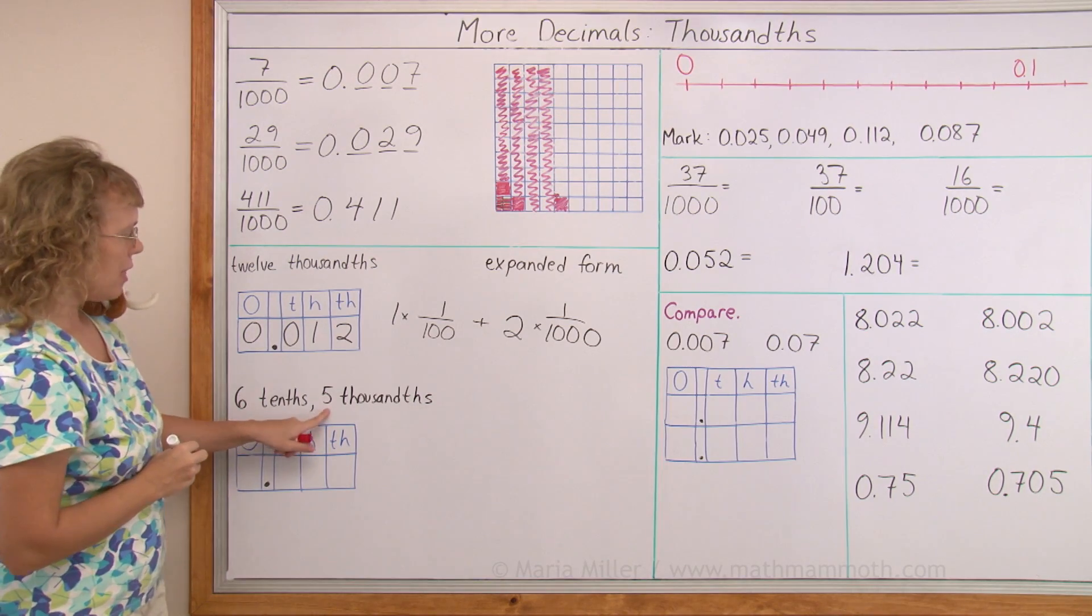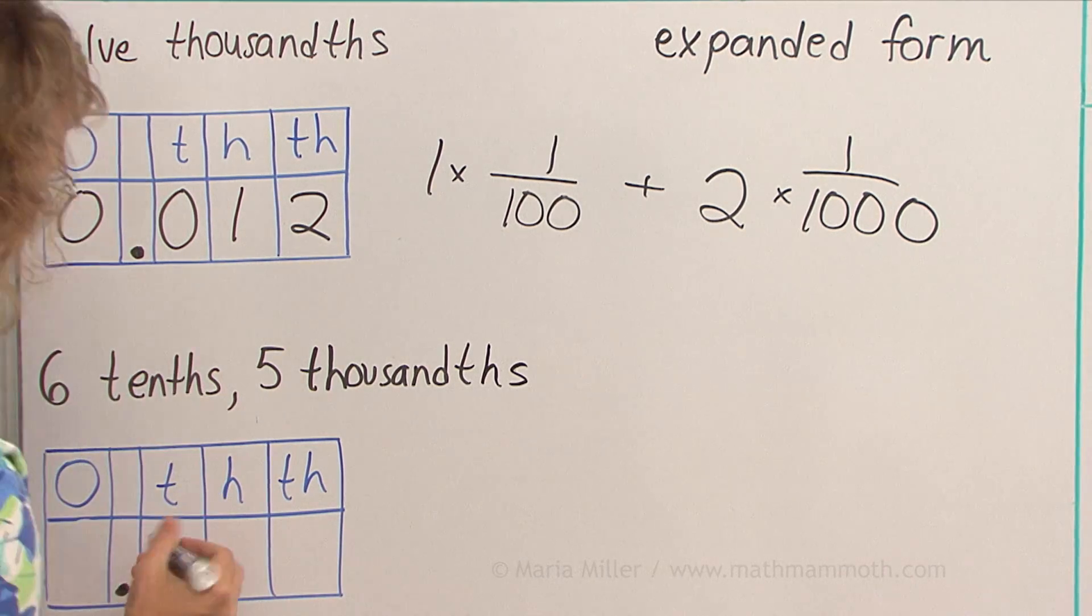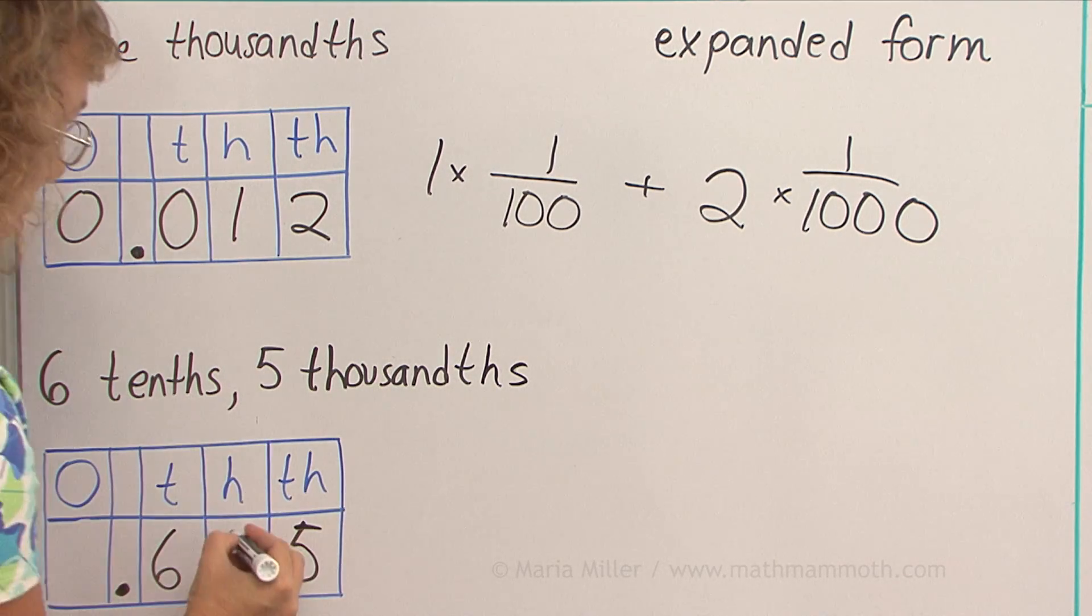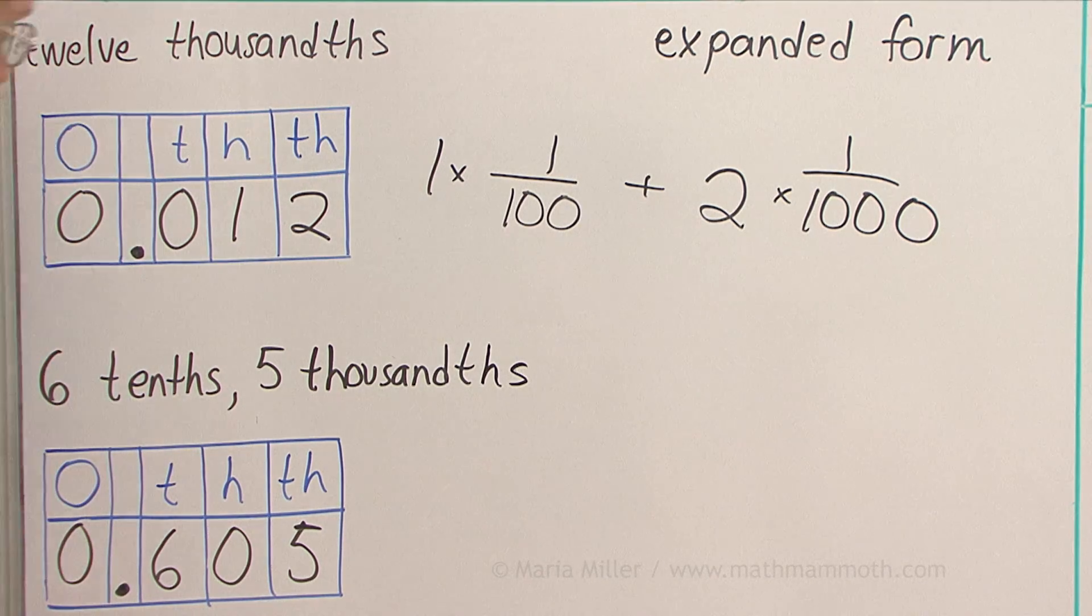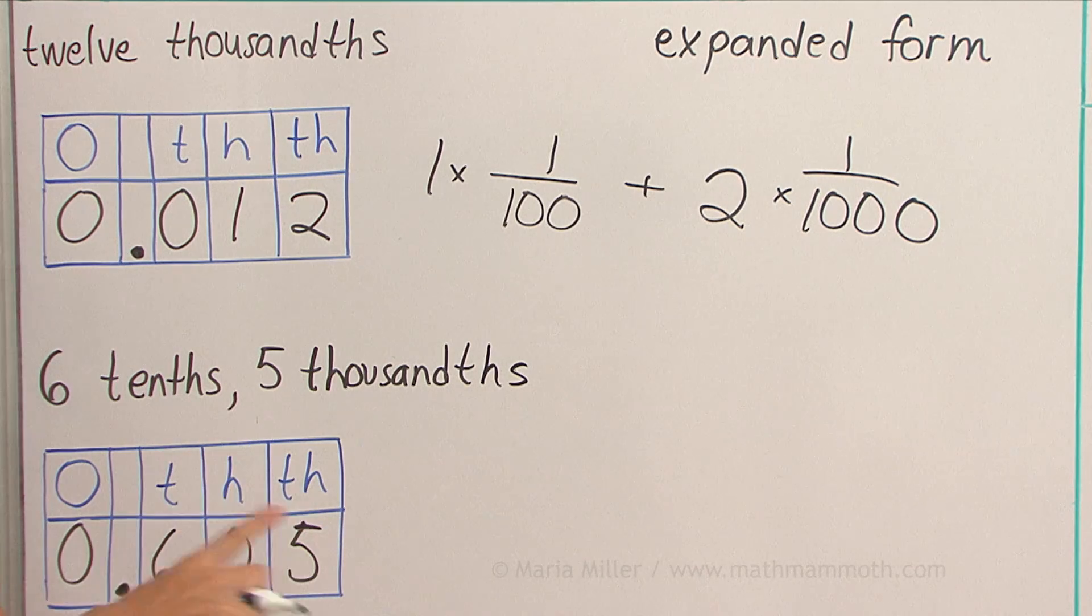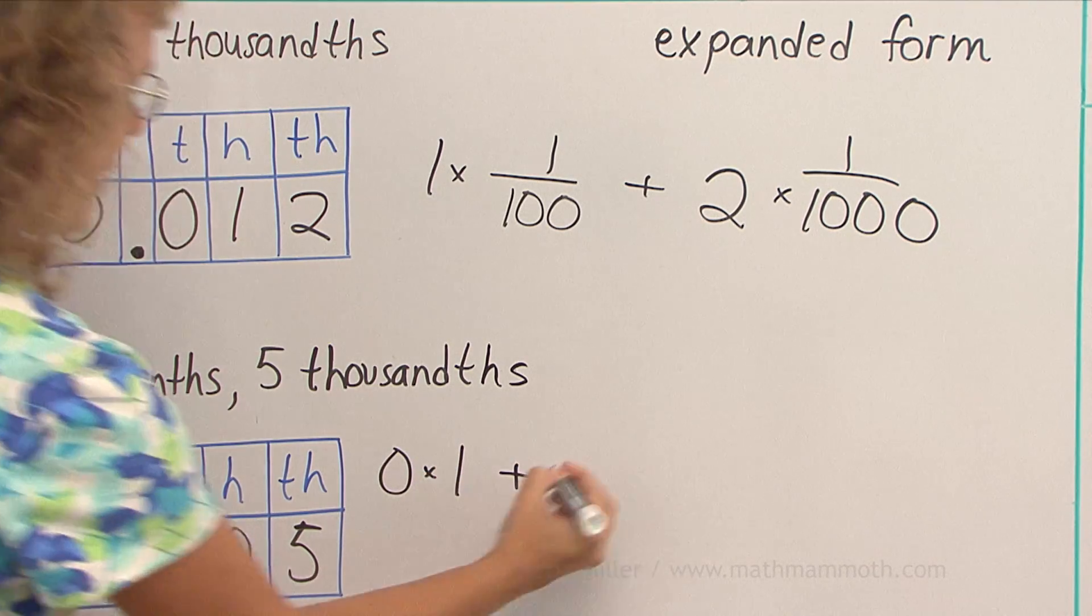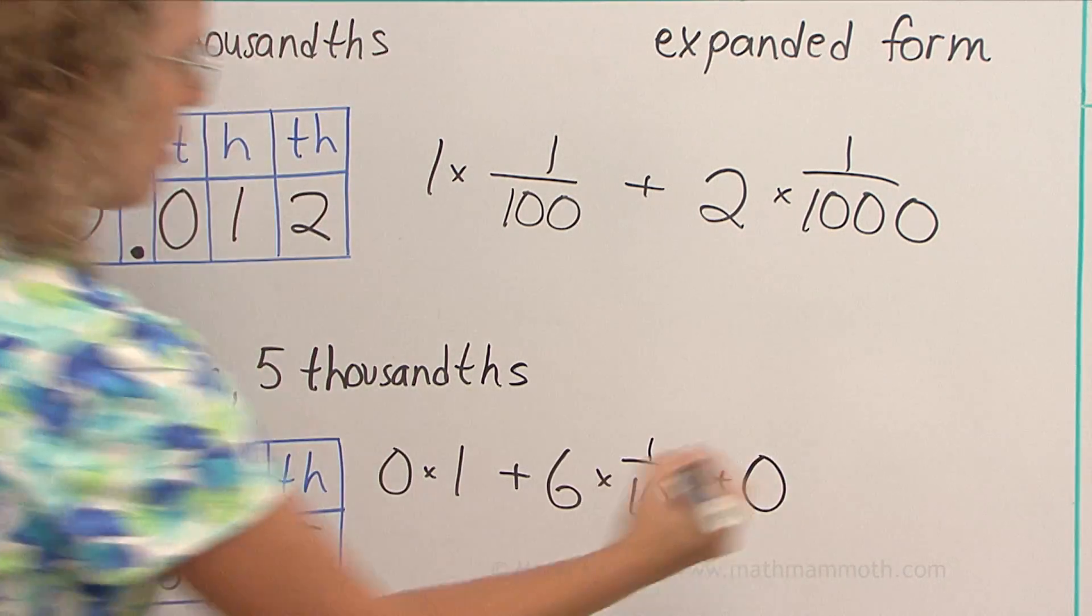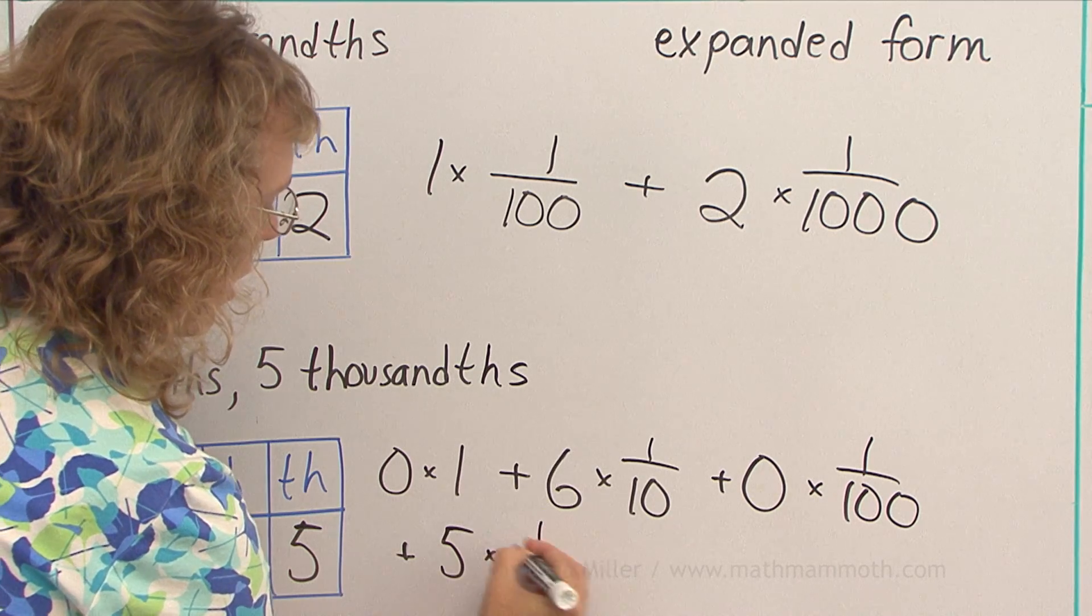Then this one, six-tenths, five-thousandths. It's easy to write in the place value chart, since it tells us six-tenths, right there, and then five-thousandths. But now for it to be a normal-looking number, I need to place zeros here in these empty places. And then, in expanded form, it's going to be a sum. If you want to make it really complete, you could start with this zero, zero times one. I'll try if I have space, zero times one. And then six, six of the tenths, and then zero hundredths. And lastly, five thousandths, like that.